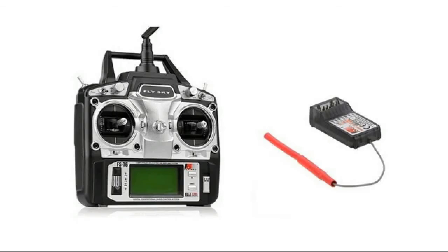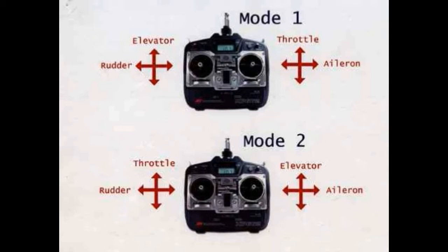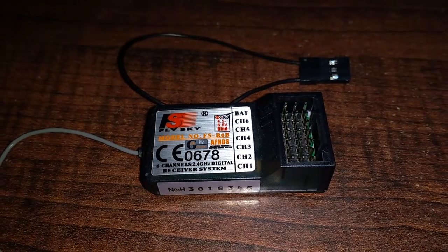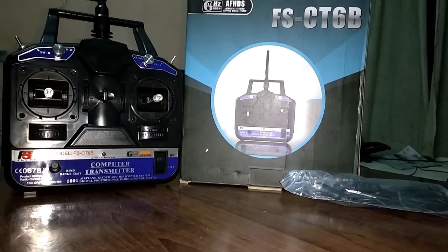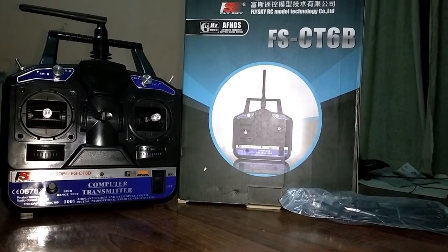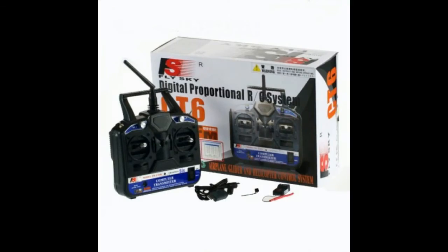The next components are the transmitter and receiver. The transmitter is the device by which one can control the working of a quadcopter, and the receiver receives the signal from the transmitter and sends it to the flight controller to control the motors. I always recommend buying a six-channel transmitter and receiver so that you have two extra channels for separate functions, for example operating LEDs.